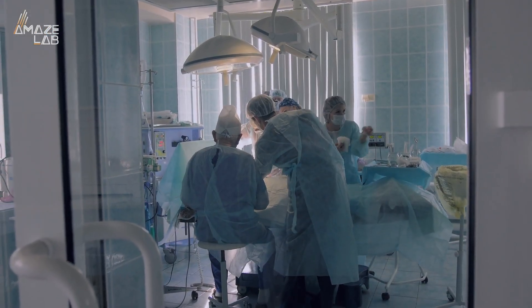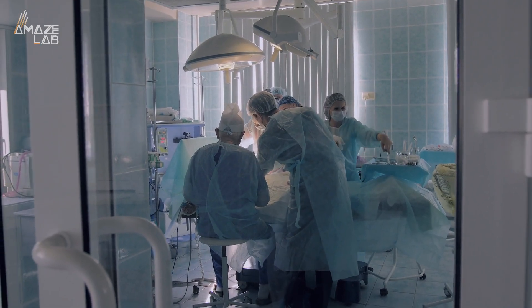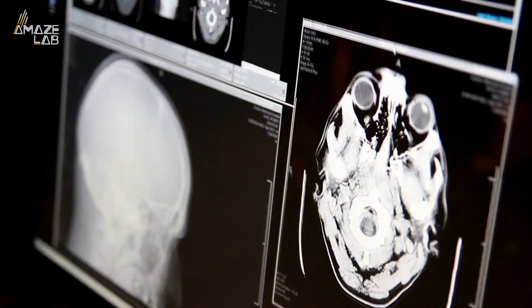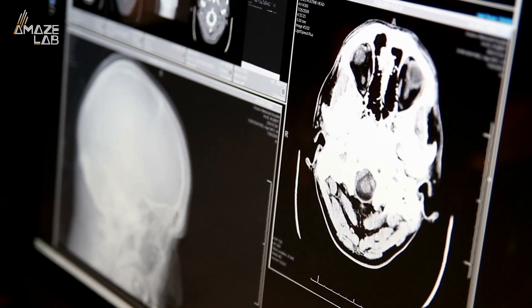They were able to image the process in humans by adding a dark contrast tracer to the cerebrospinal fluid (CSF) of five adults undergoing brain surgery. They then scanned the patients with MRI and tracked the CSF as it moved through the brain.